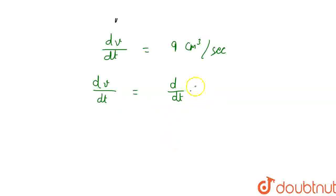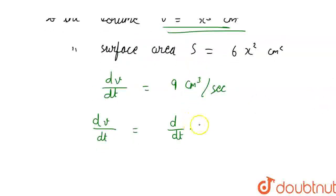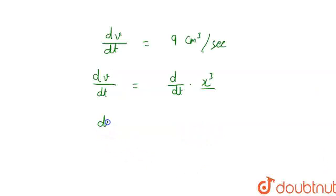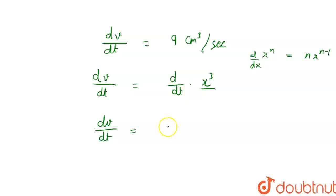So dV/dt equals d/dt of V, and V = x³, so d/dt of x³. Now we differentiate x³: since x is also a function of t, we use the power rule — d/dx of xⁿ = n·xⁿ⁻¹ — so differentiation of x³ gives 3·x^(3−1) = 3x², and then by chain rule we multiply by dx/dt.